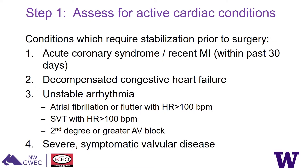I'm going to take you through the steps I go through in doing this process. The first step is to assess for any active cardiac conditions — conditions which require the patient to be stabilized prior to surgery. The first is ACS, acute coronary syndrome, or recent MI, defined as happening within the past 30 days. Number two is decompensated heart failure. Number three is an unstable arrhythmia — a-fib or flutter with RVR, heart rates above 100 beats per minute — as well as SVTs and second-degree or greater heart blocks. And the fourth is severe symptomatic valve disease, such as aortic stenosis.